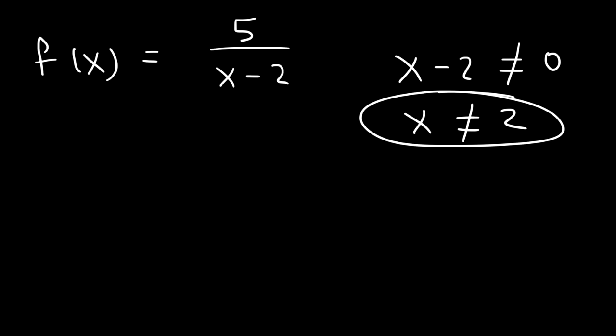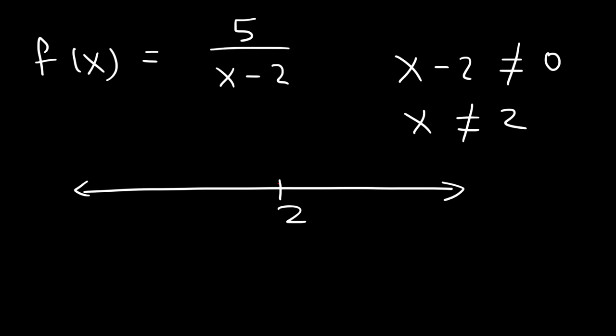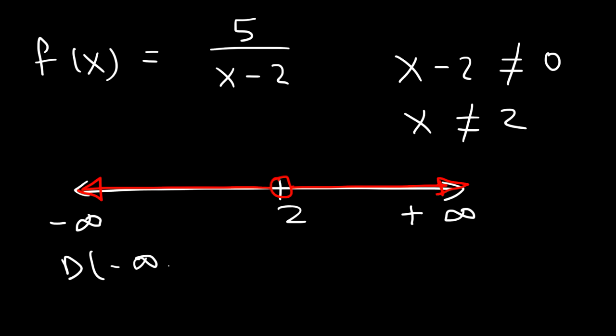So how do you represent this using interval notation? If we draw a number line, x could be anything except 2. So at 2 we're going to have an open circle. It can be greater than 2, or it can be less than 2. All the way to the left you have negative infinity, all the way to the right positive infinity. So x could be anything from negative infinity to 2, but not including 2, or it could be anything from 2 to infinity. That's how you write the domain using interval notation for this example.